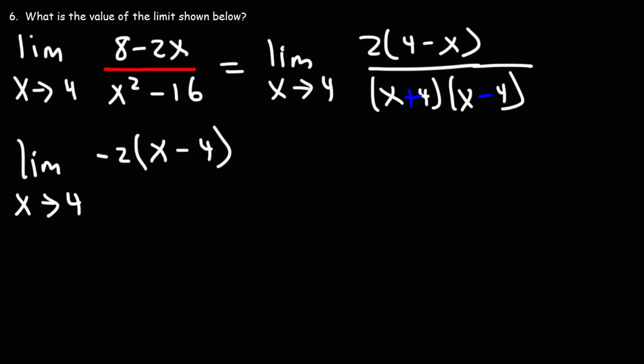When you're adding two numbers, the order doesn't matter. Five plus three and three plus five is still eight. So you can think of this as four plus negative x, which is the same as x plus negative four. Now at this point, we can cancel the x minus four factor.